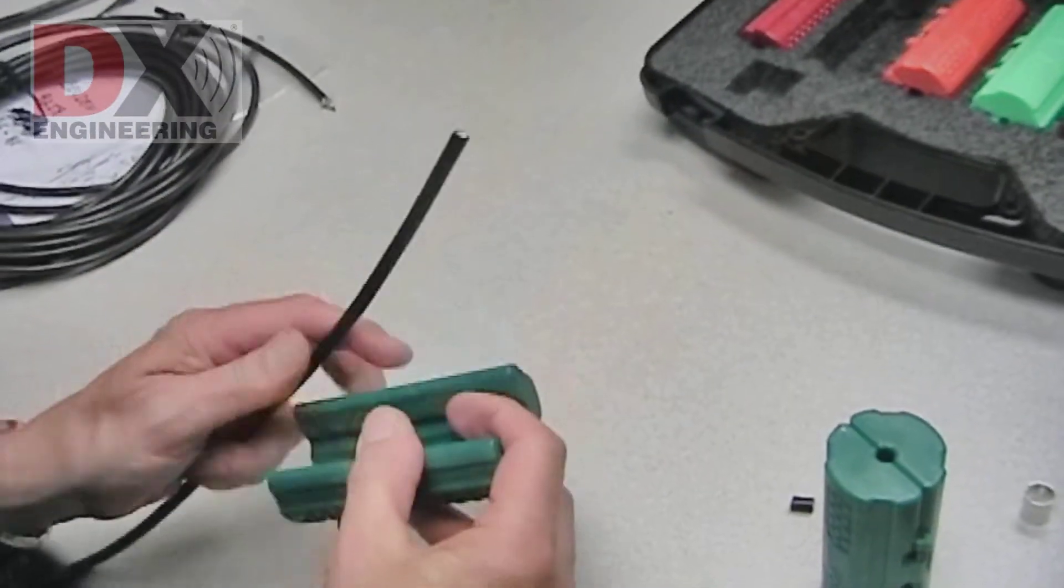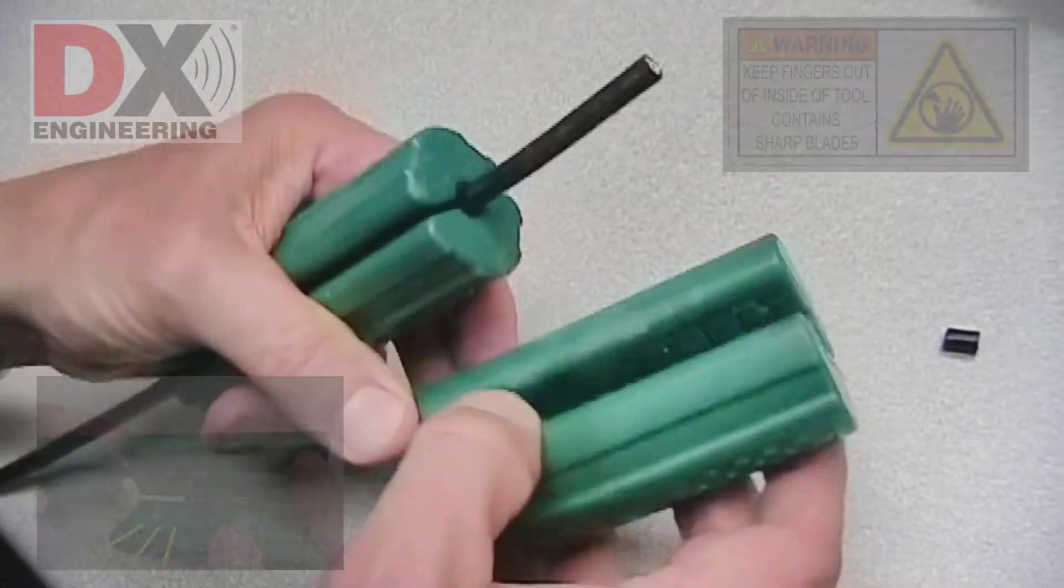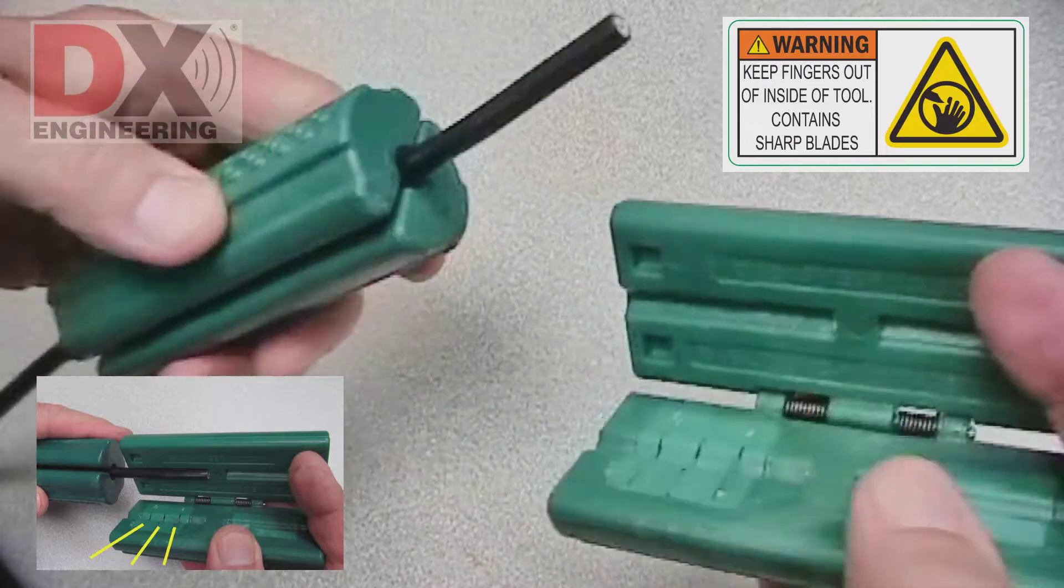Insert the cable in the coax gripper. The gripper helps you hold the coax firmly. Open the tool. Be careful to keep your fingers away from the blades. They are sharp.